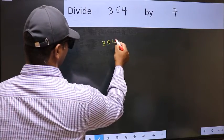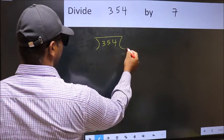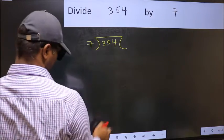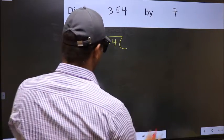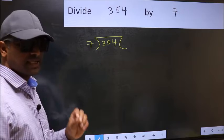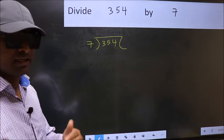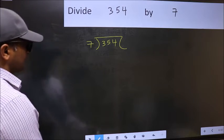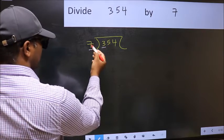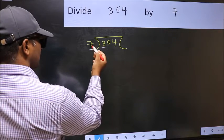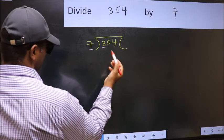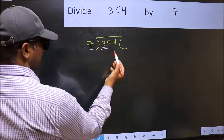354 and 7 here. This is your step 1. Next. Here we have 3 and here 7. 3 is smaller than 7. So we should take 2 numbers, 35.